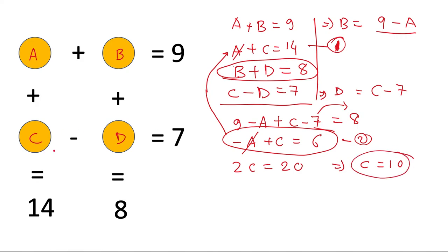So we have c. Then d is c minus 7. So d is 10 minus 7, which is 3. So we have c and d.